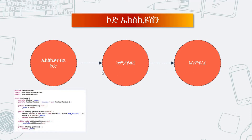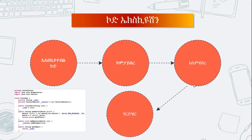When the executable code is used, we can use the assembly program. In this program, you can use the code to assemble the code. As you can see, when you use the code, you can use the machine language and the hardware.